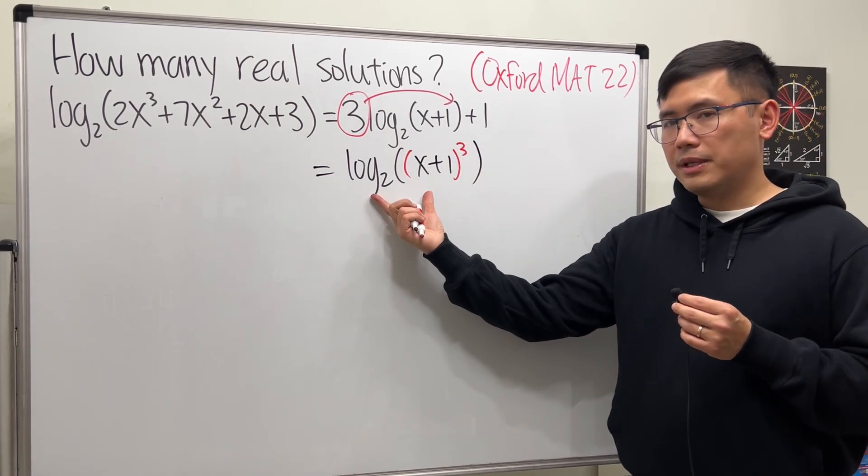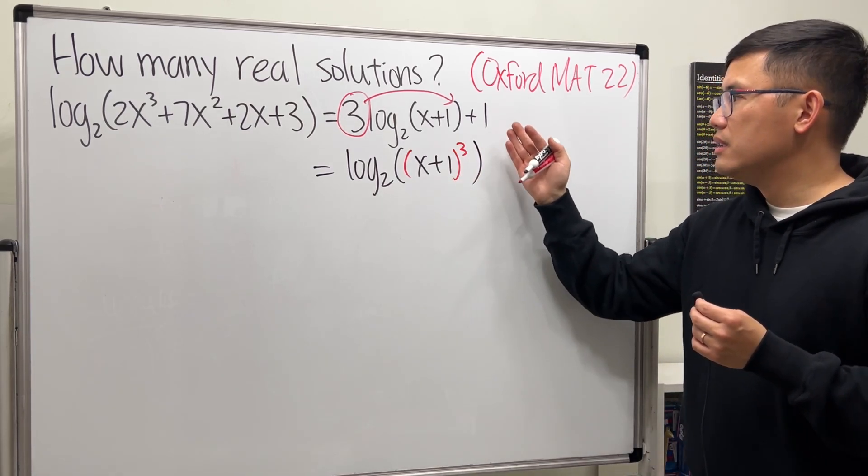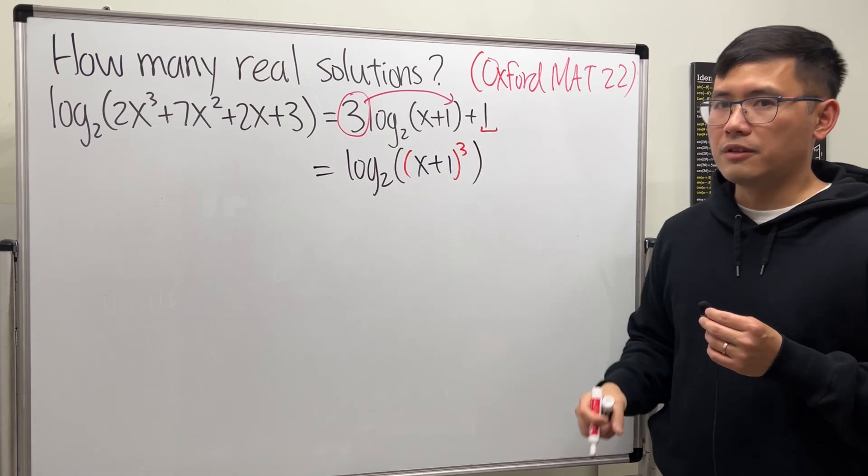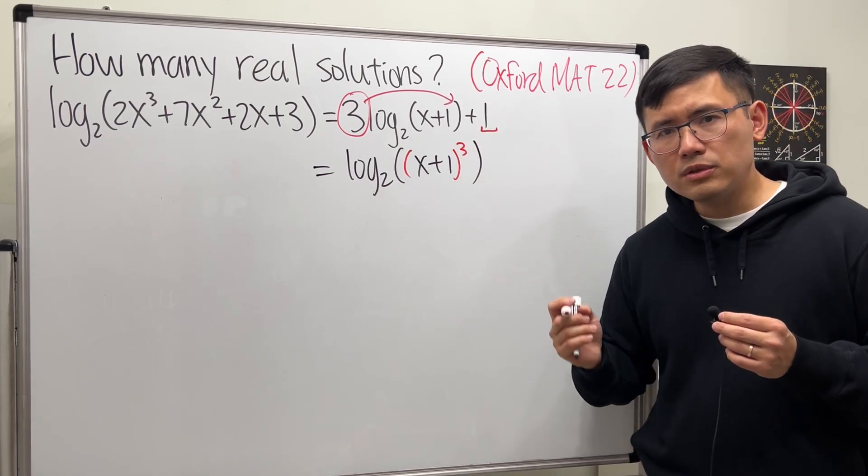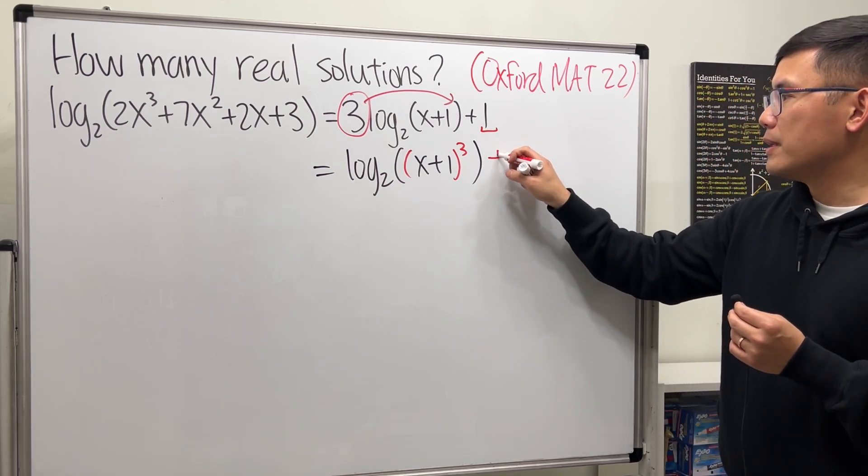Here we have log base 2, this is just a one. In order for us to combine two things, this shall also be in terms of log base 2. So log base 2 of what will give us one? The answer is log base 2 of 2.